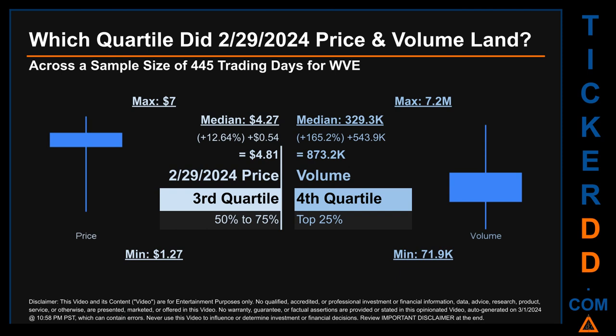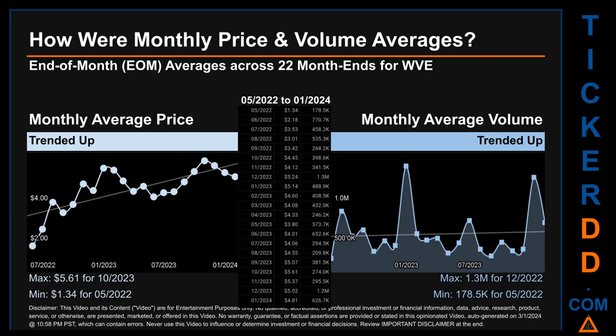Daily volume saw a max of 7.2 million and a minimum of 71,900. Quartiles tell us about the spread of a data set by breaking it into quarters, just like how the median breaks the set into halves. Descriptively, WVE has a median price of $4.27; therefore, February 29, 2024's price was higher than that middle marker by 12.64%. The day's volume of 873,200 was more than the median by 165.2%.